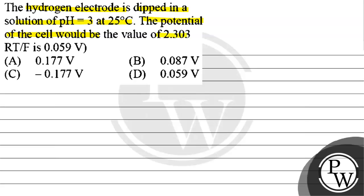We have the value of 2.303RT by F, how much is it? 0.059V. Option A is 0.177V. Option B is 0.087V. Option C is minus 0.177V. Option D is 0.059V.